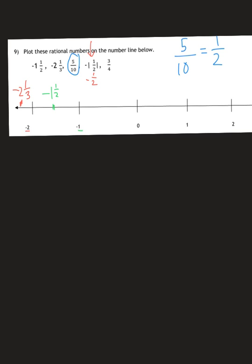Next, we had 5 over 10, which we simplified to 1 half, and that's a positive. We're halfway between 0 and 1. Remember, you want to write it as the original number. So 5 over 10 is halfway between 0 and 1.